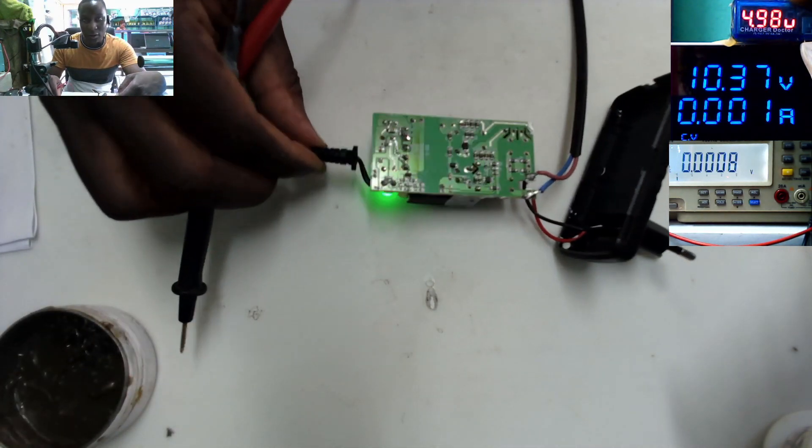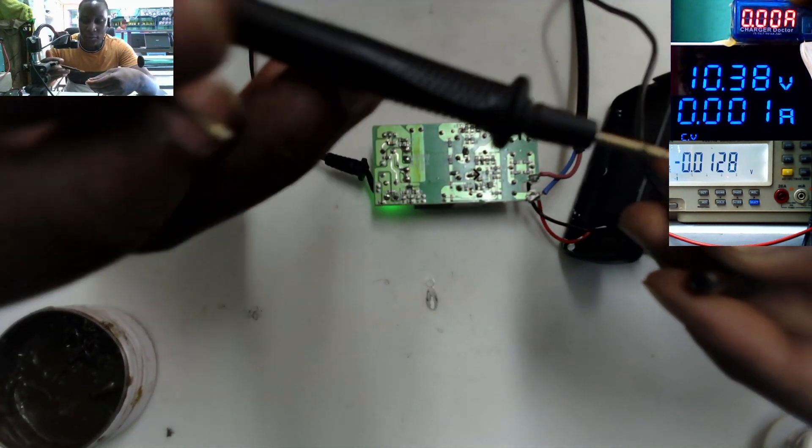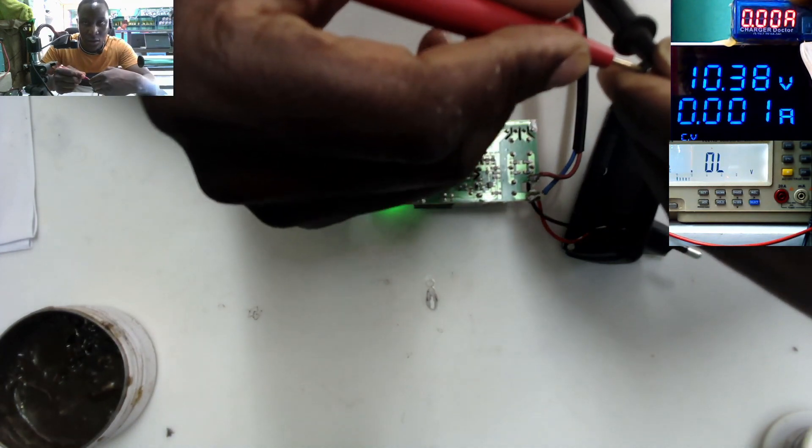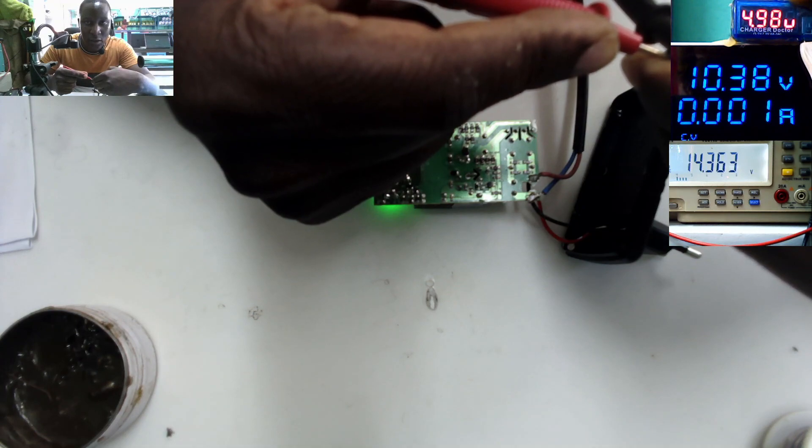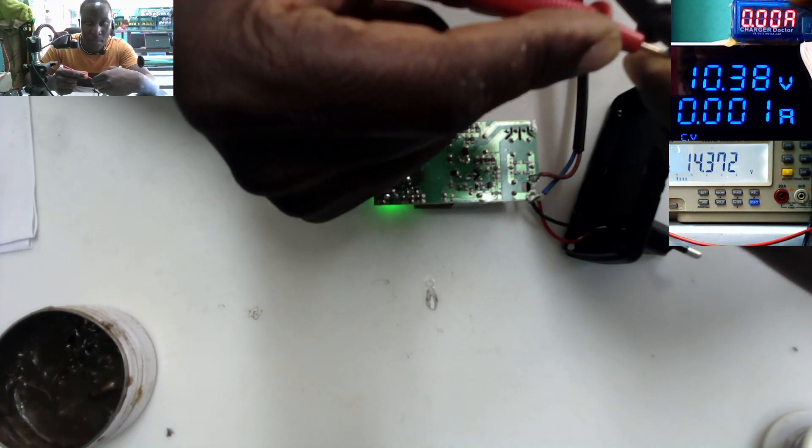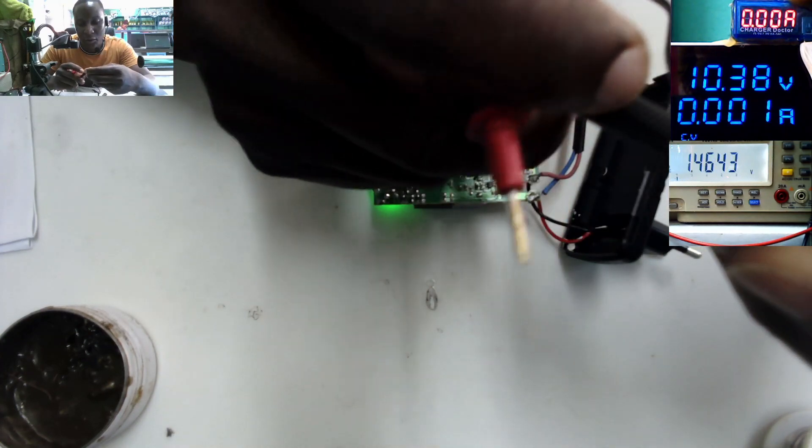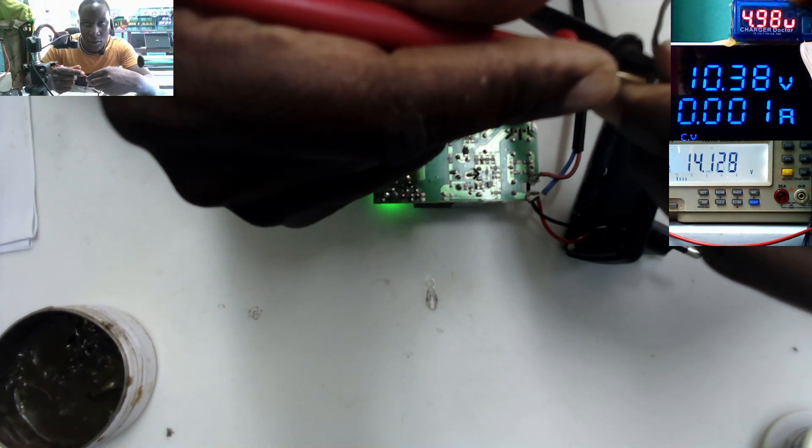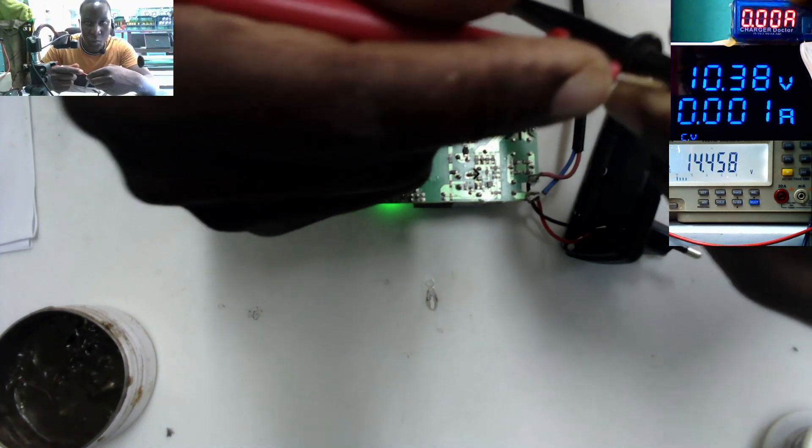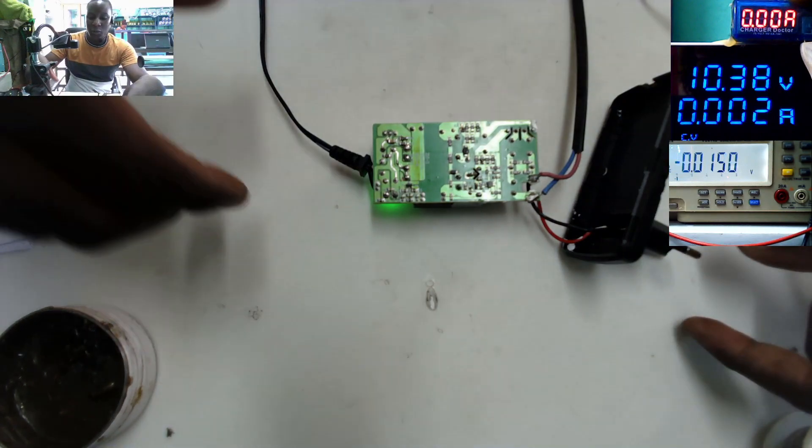We still have a green light. I'll check on the output. Check on the test meter: 14.3 volts, which I believe is good. So our charger is working fine.